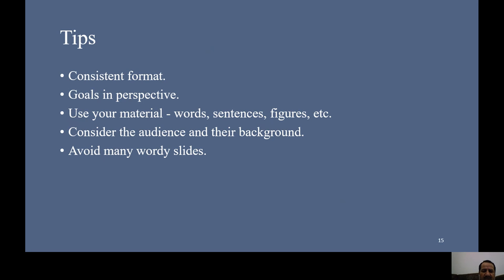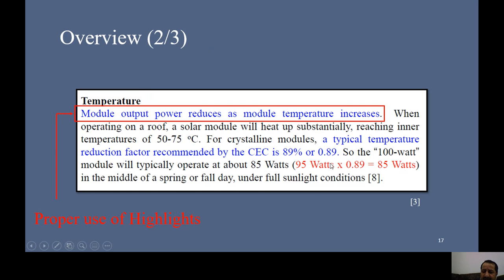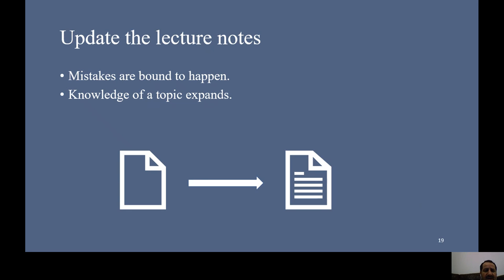Avoid wordy slides. There is a rule called seven times seven — avoid having more than seven lines in one slide, with each line having more than seven words. This is a guide, but the message is: avoid too much text in your slides. Use bold headings, and highlight important ideas — I use blue for important ideas and red for calculations. Proper citation should also be visible so students can follow up.